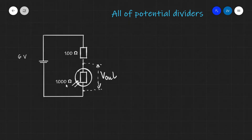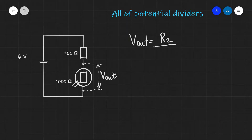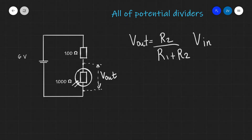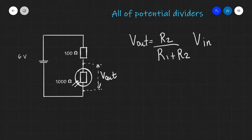I'm going to call this V_OUT. The first formula that we're going to be looking at is as follows: V_OUT is equal to R2 divided by R1 plus R2, multiplied by V_IN. Now it is important to note that in this equation, R2 is the resistance across the component that we've chosen to measure the output voltage. So for instance, if our V_OUT is across this 1000 ohm resistor, then our R2 will be 1000.